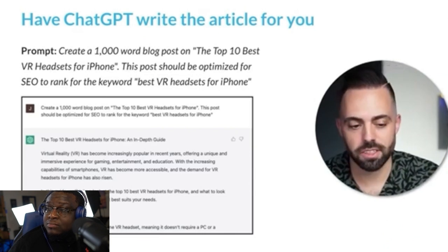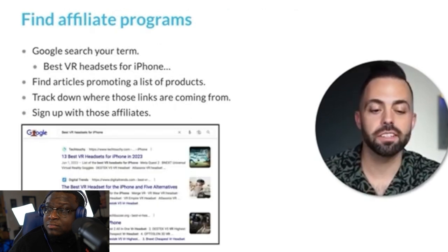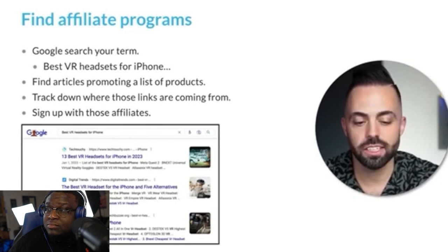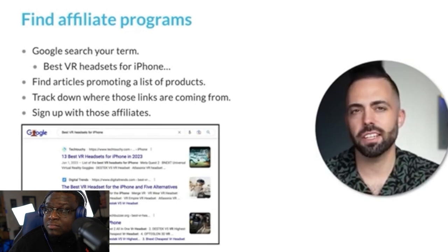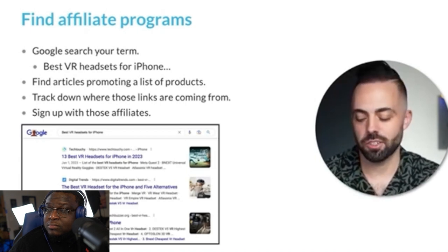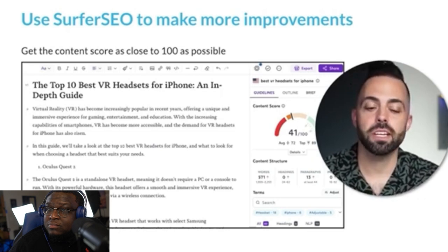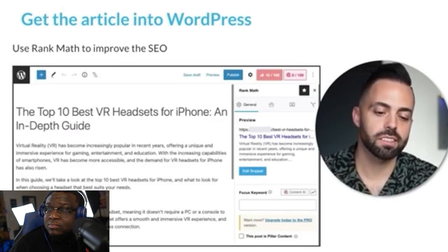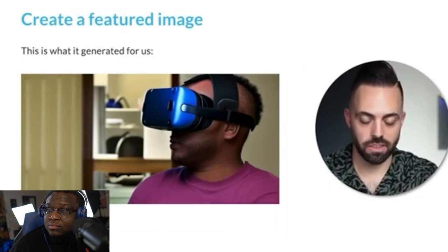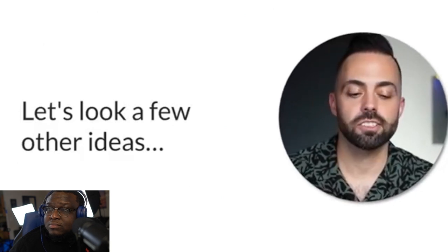Again, we go through the same steps: 'create a 1,000-word blog post on the top 10 best VR headsets for iPhone.' It does the same thing. Find the affiliate program — Google 'best VR headsets for iPhone,' look at some of the sites, see where the affiliate links are coming from — a lot will be Amazon at first. Dump it into Grammarly again, then Surfer SEO for improvements, get it into WordPress, improve the SEO, create a featured image — and here's what it generated for the VR headset — then drop it in and publish.